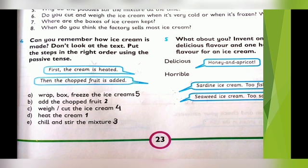Now the last exercise on page number 23: there are different steps used to make ice cream, and you have to put the correct number according to the sequence. Heat the cream — 1. Add the chopped fruit — 2. Stir the mixture — 3. Weigh or cut the ice cream — 4. Wrap, box, and freeze the ice creams — 5. We will write the passive tense of these 5 sentences in our textbook and the answers to exercise 3 in our fair copy.